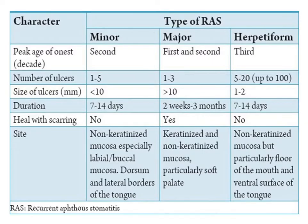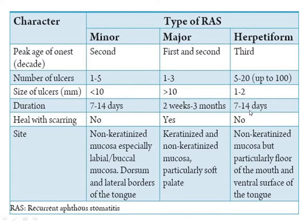The peak age of onset for minor aphthous ulcer is the second decade; major is first and second; herpetiform is the third. The number of ulcers: minor is 1 to 5; major is 1 to 3; herpetiform is 5 to 20, sometimes coalescing to form a large ulcer. Size: minor is less than 10 mm; major is greater than 10 mm; herpetiform is 1 to 2 mm. Duration of healing: minor is 7 to 14 days; major is 2 weeks to 3 months; herpetiform is 7 to 14 days.